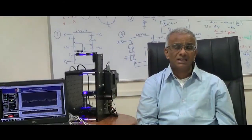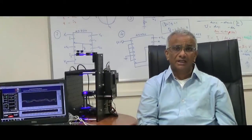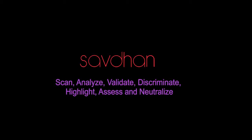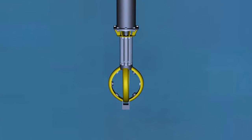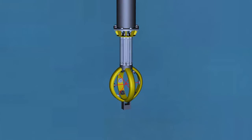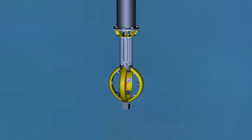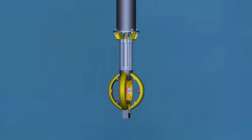The last technology I would like to talk about is Savdhan. Savdhan can be used either in air or in water, over land or over the ocean. Savdhan enables one to detect and discriminate targets, and so it has tremendous applications for surveillance purposes.